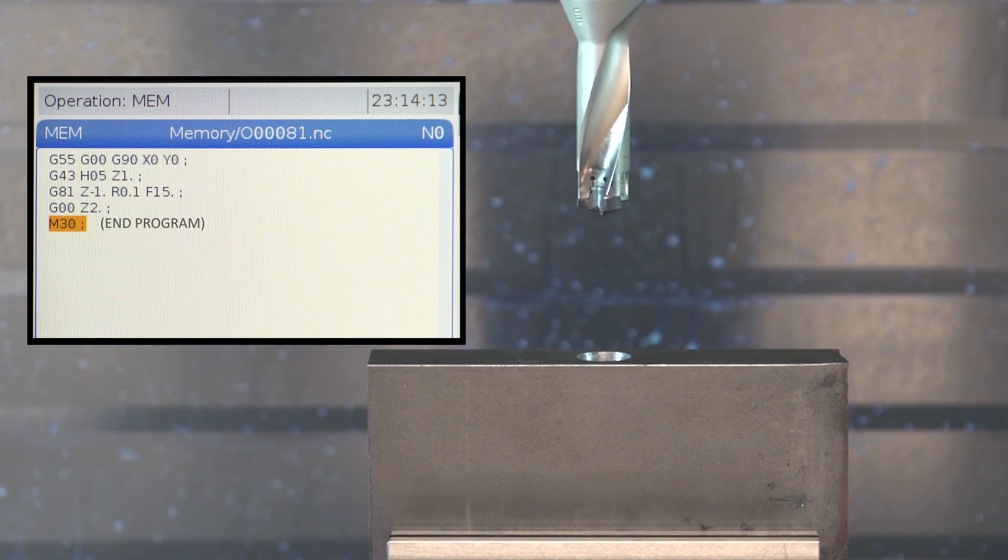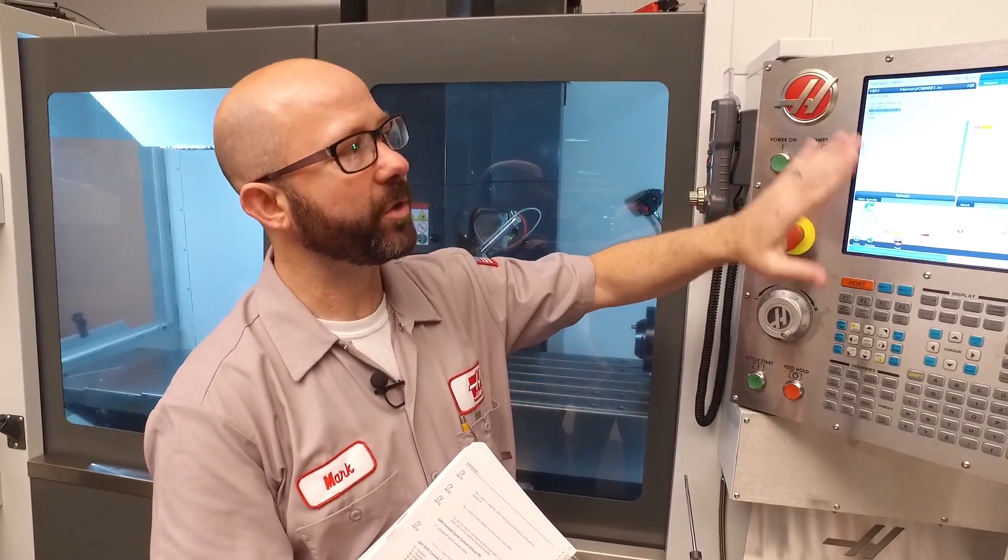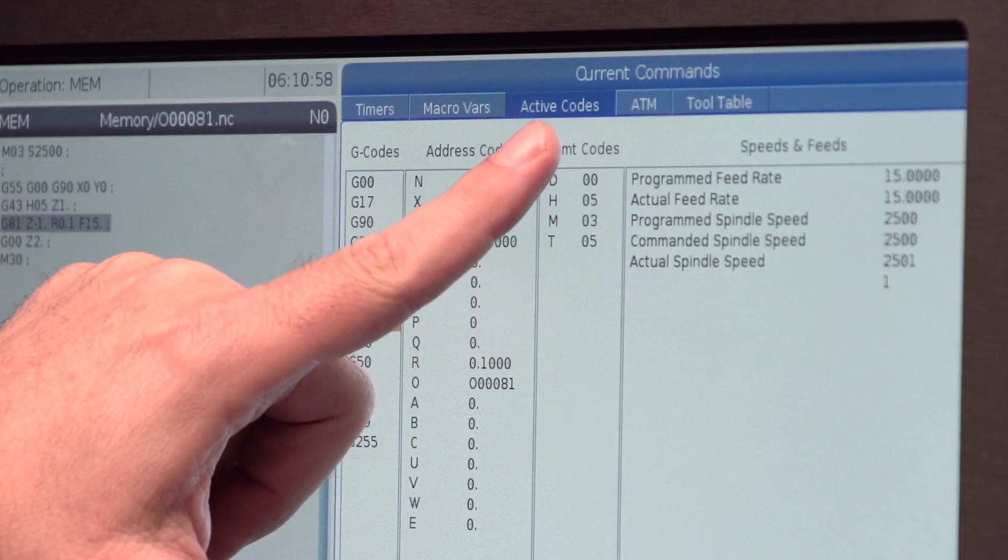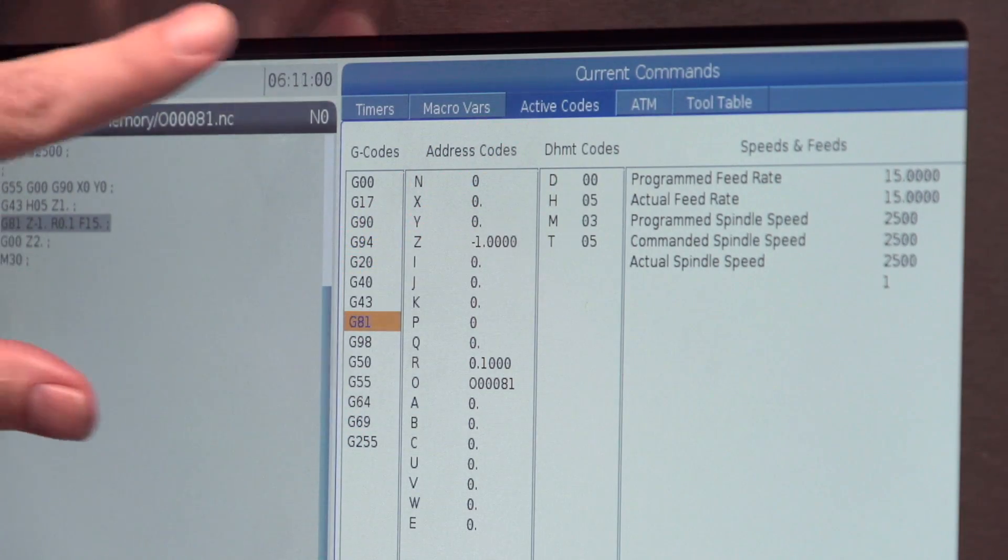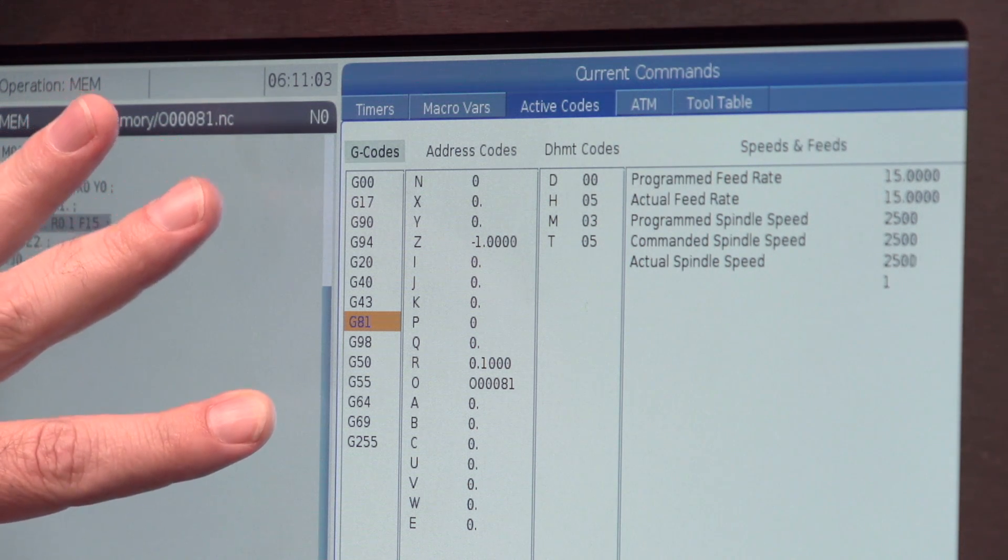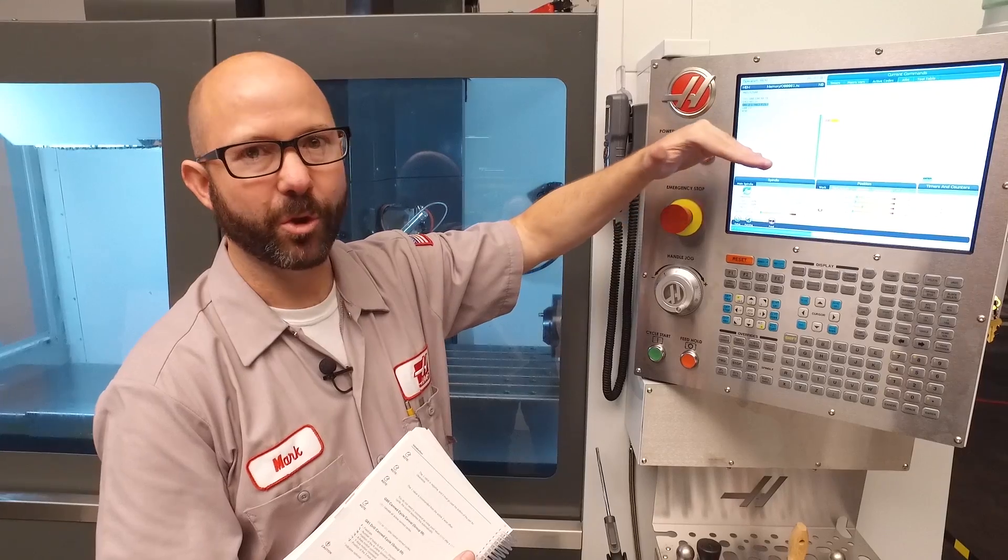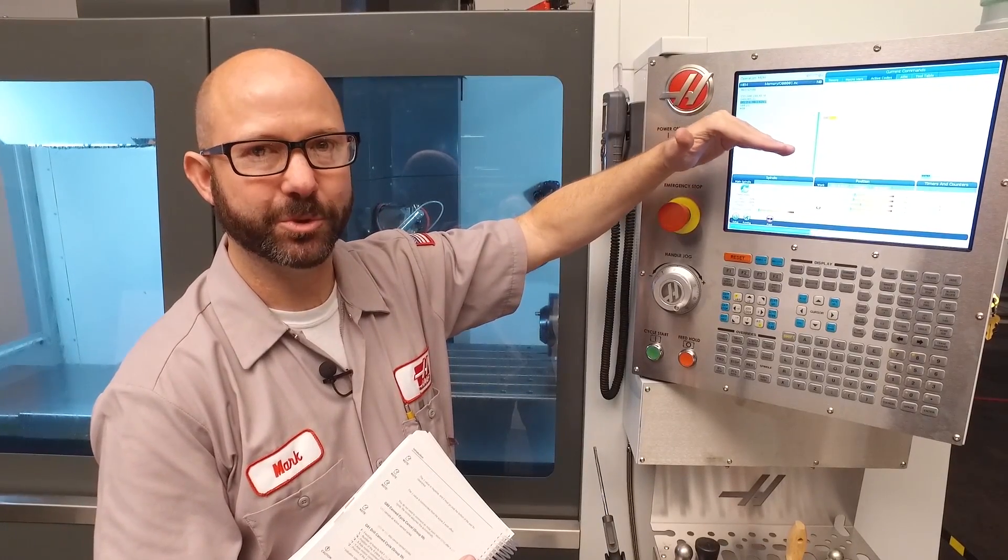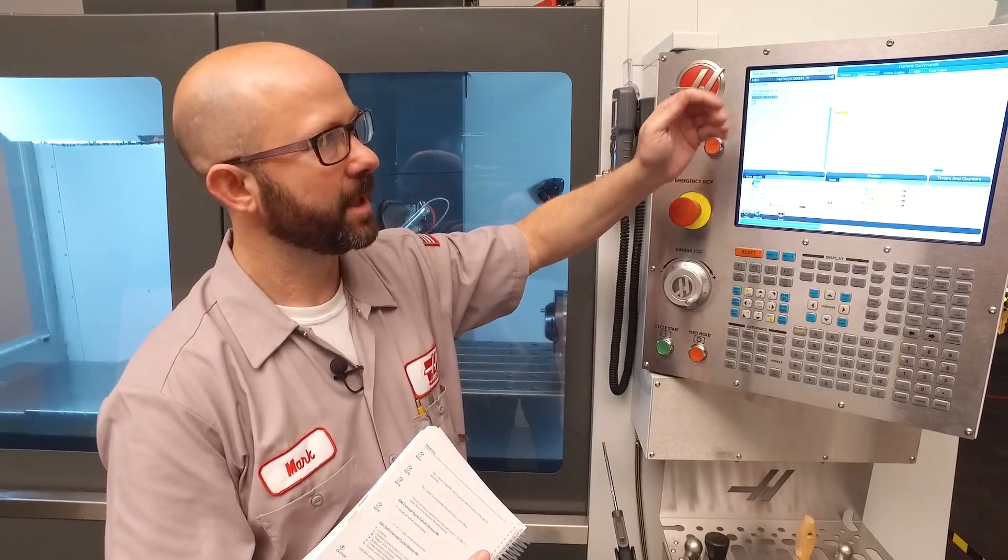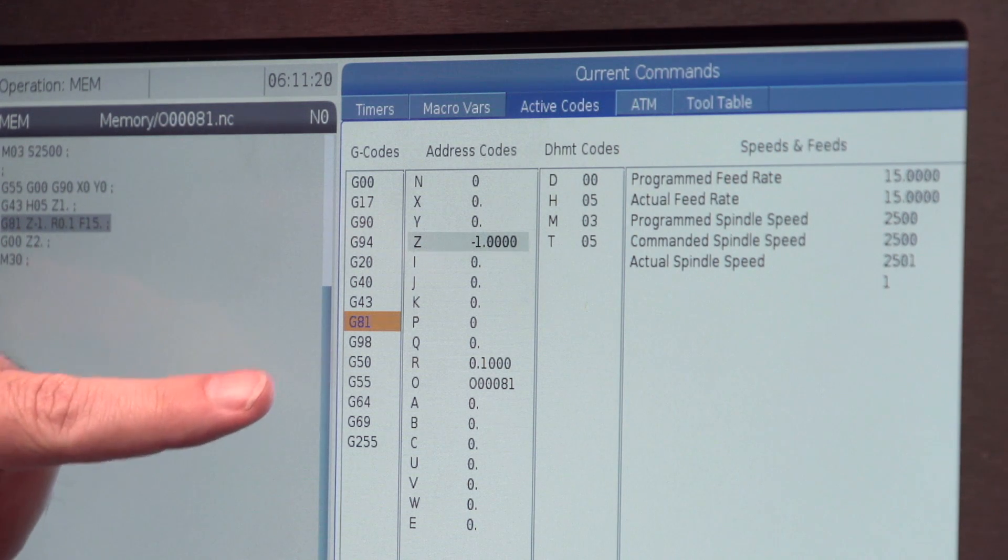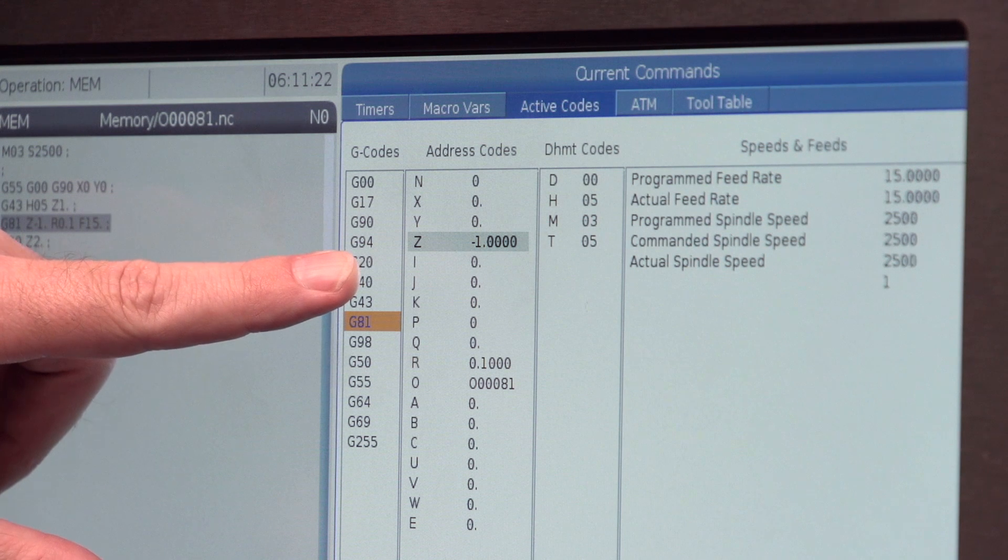Now as this program runs, I can see all the codes that have been used on our current commands, active codes tab. The left column shows me all of my G-codes. Each row is a different G-code group. There's only a spot for one code from each group at any one time. The next column shows our address codes. In this case, it shows a value of Z-1 and an R value of .1.